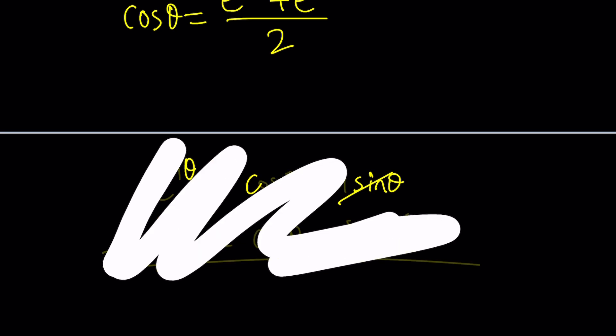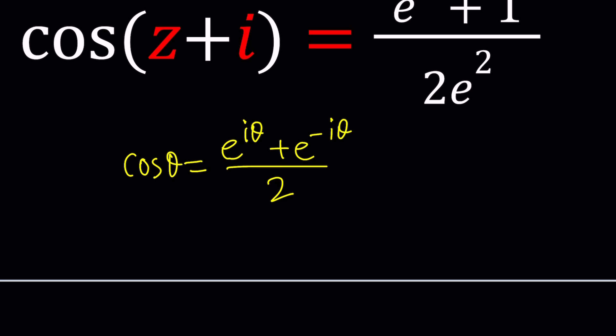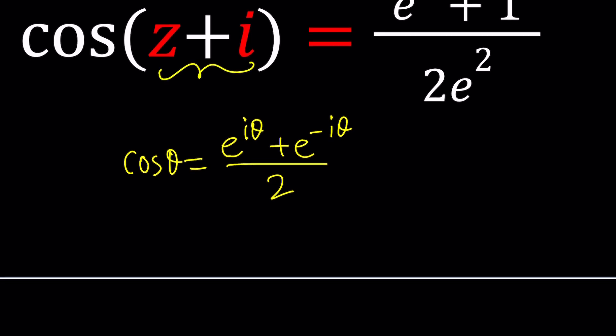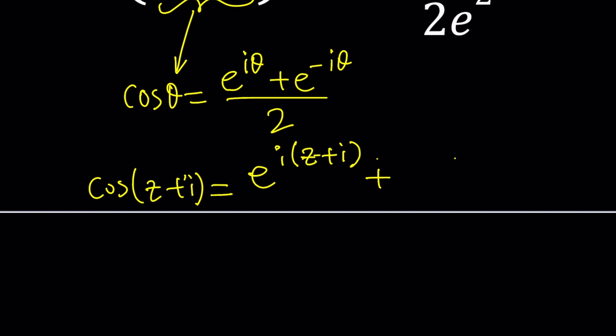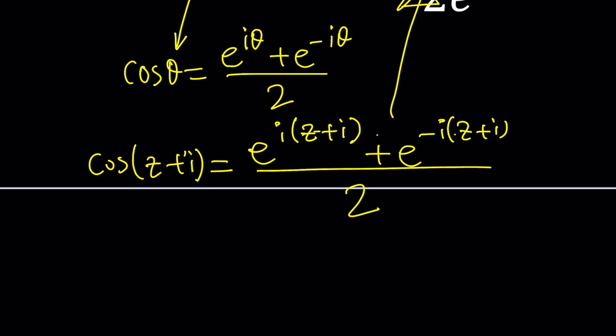Let's go ahead and use this formula. Now we're going to go ahead and plug it in. And like I said earlier, this does not have to be real. So now we're going to replace theta with z plus i. Let's do it on both sides. So cosine z plus i is going to be e to the power i times z plus i, plus e to the power negative i times z plus i. And I'm going to divide all of that by two. And this is supposed to equal the expression above. So here's one thing we can do. We simplify this one as much as possible.